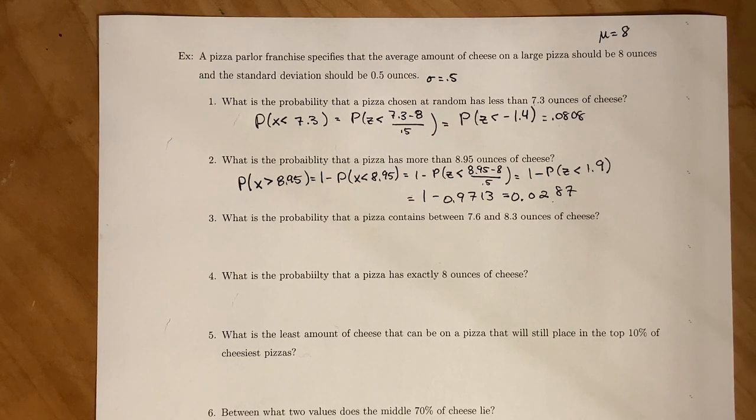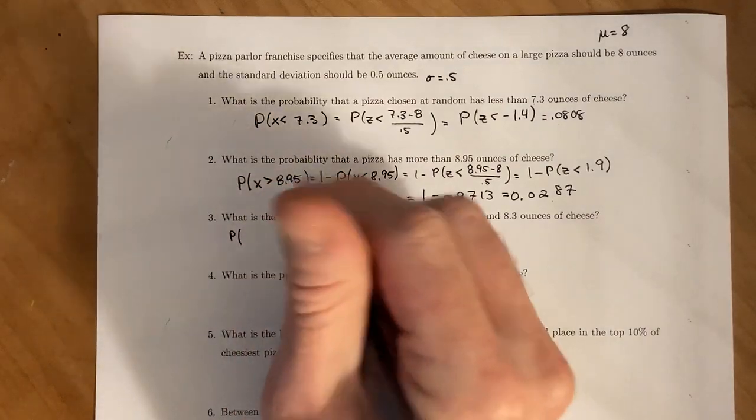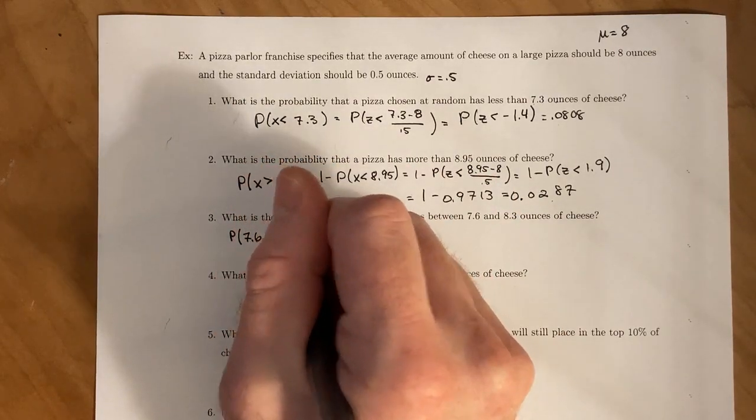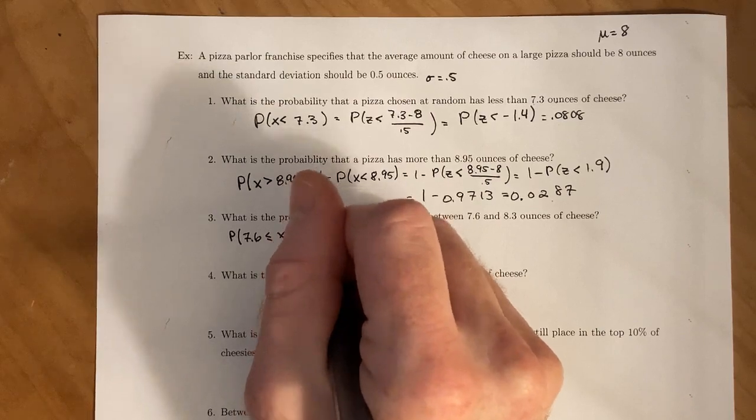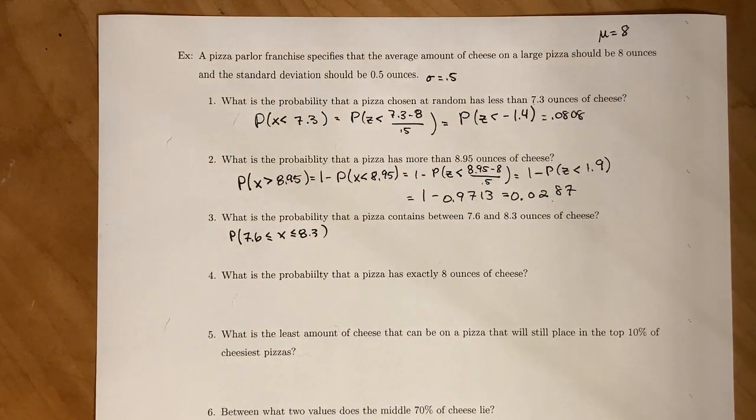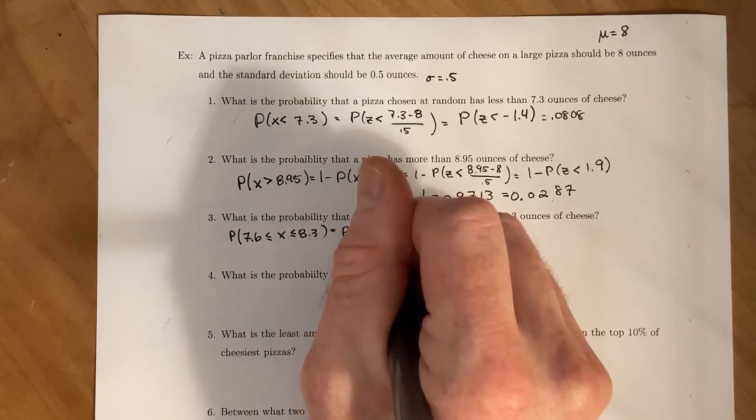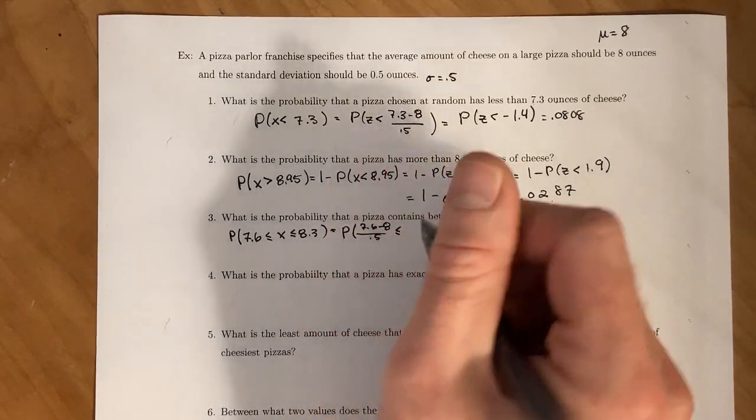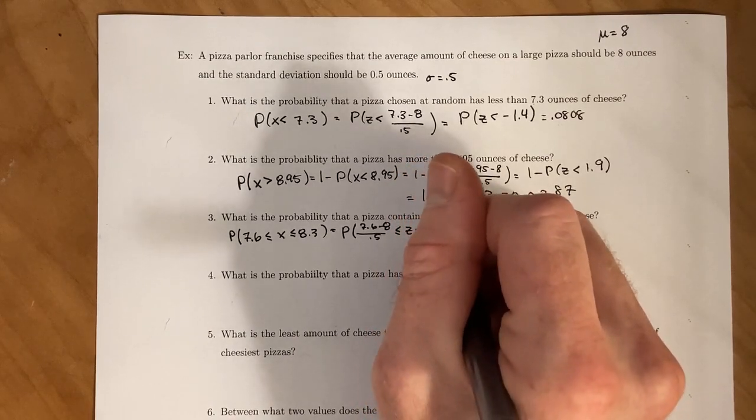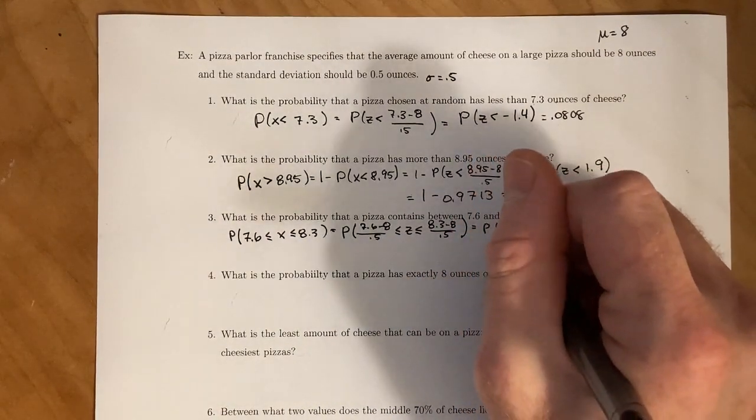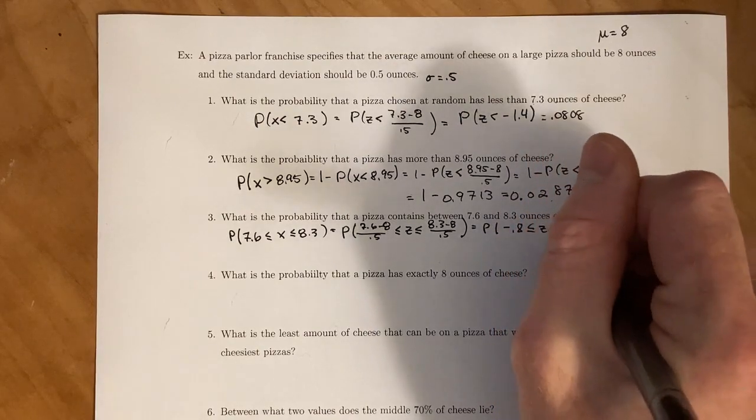Next, we want to find the probability that pizza contains between 7.6 and 8.3 ounces of cheese. So we're looking for the probability that our cheese is between 7.6 ounces and 8.3 ounces. We're first going to take everything and convert it to z-scores. That's going to be the probability 7.6 minus 8 over 0.5 less than or equal to z, less than or equal to 8.3 minus 8 over 0.5. Once we convert it to z-scores, we get negative 0.8 and positive 0.6.